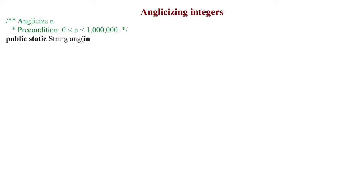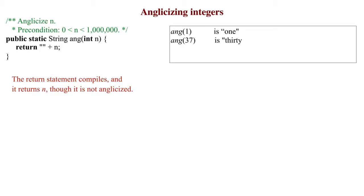Function ang returns the words for a positive integer n less than one million. We have written a return statement so the function compiles, and it returns n as a string, though not anglicized.